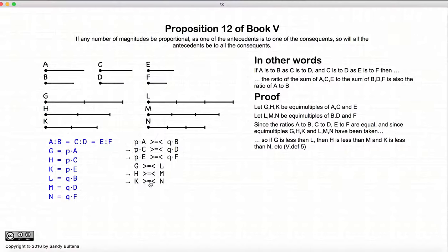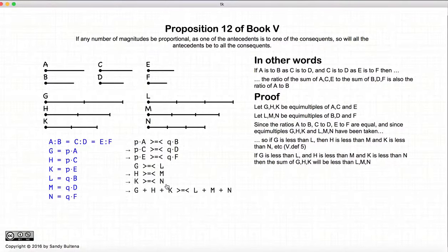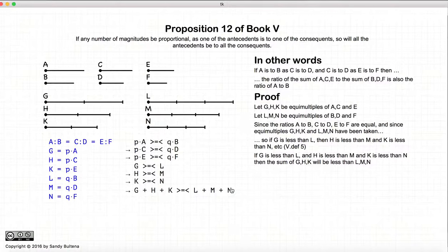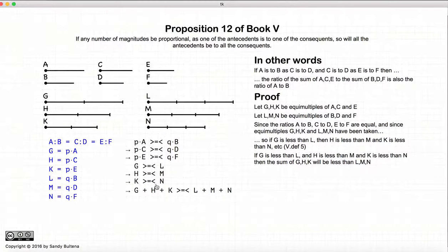Of course, that also goes for the equals and for the less than. So if we take the sum of G, H, and K — G is greater than L, therefore H is greater than M, therefore K is greater than N — so G, H, and K are all greater than L, M, and N respectively. Consequently, G, H, and K added together would be greater than the sum of L, M, and N added together. Similarly, that would be true for equals and for less than.